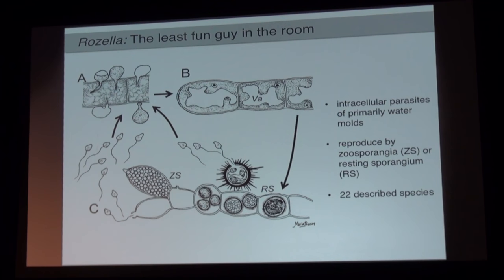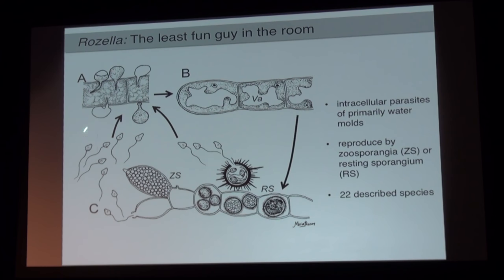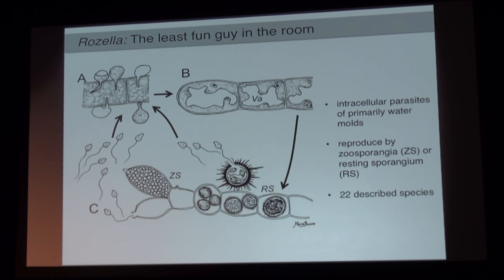The story starts back in 2006 with a really obscure fungus called Rosella — I'm calling it the least fun guy in the room, because it's not very fungal. You've never heard of it because it just attacks water molds and doesn't do anything economically interesting. It's an endoparasite that grows inside the cell without a cell wall — very non-fungal, since most fungi digest things across a chitinous cell wall. Rosella also produces cool zoospores, so it had long been considered a kind of chytrid fungus, like the amphibian disease fungus many of you have heard of.